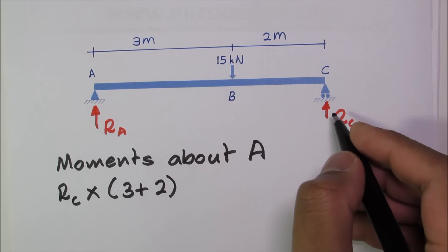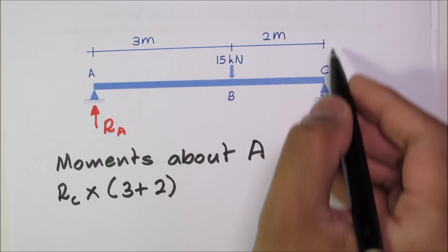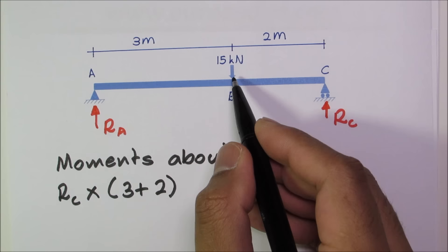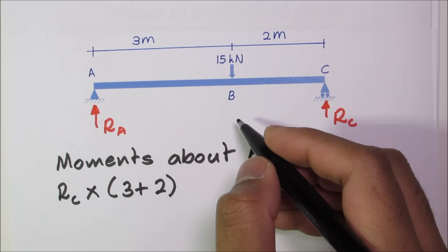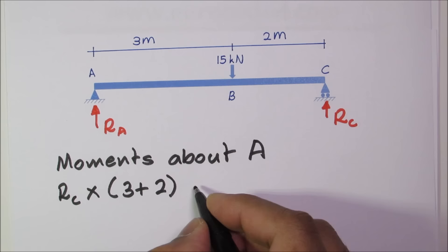RC is causing an anti-clockwise moment. As you can see it would try to rotate this beam in this direction anti-clockwise. And then we have this 15 kilonewton force acting at B which is causing a clockwise moment. It would try to rotate this beam about A in this direction. So we can write this is equal to 15 times the lever arm 3 meters.